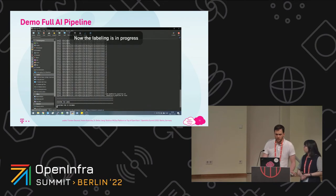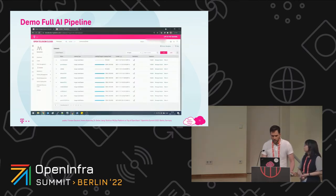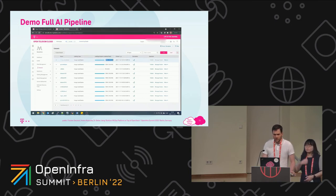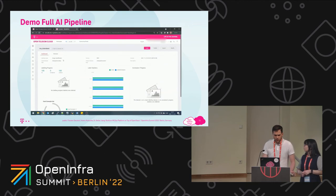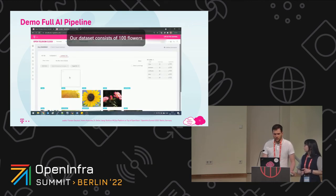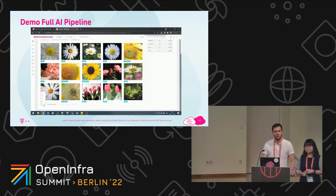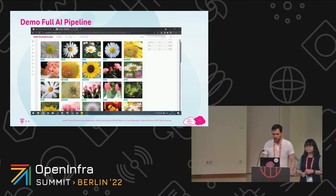In a few seconds, when I refresh the dataset dashboard, you can see it's already labeled — 100 out of 100. The last step in progress is the publishing of the dataset, which should also finish shortly. We now have a newly created dataset containing 100 flower images. I click on the dataset name, and as you can see the labeling progress is 100%, all 0 unlabeled. Here you can see tulips, dandelions, sunflowers, daisies, and roses — these five categories of flowers, 20 images each, altogether 100 images.